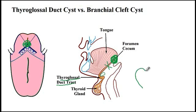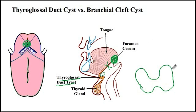What may remain of it is something called the pyramidal lobe. So if you have thyroid tissue, and originally the thyroglossal duct was attached to it, it will get obliterated, and what may remain of it would be a pyramidal lobe extending from the thyroid tissue.